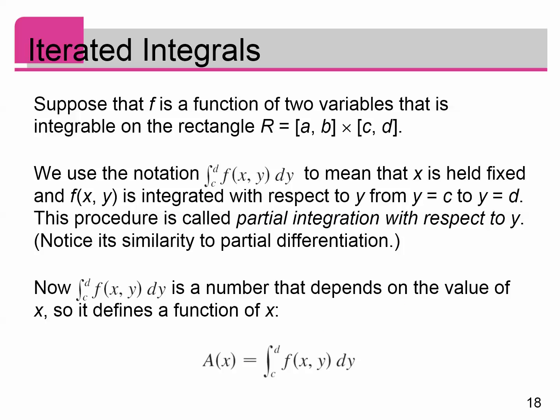So suppose that a function F is a function of two variables on some rectangle. We're going to use the notation the integral from C to D of F of X, Y, DY to mean that this integral treats X as a constant. X is held fixed. And then F of X, Y is integrated with respect to Y only. And then you plug in the limits D and C and subtract. This is called partial integration, and it's very much like partial differentiation where we treat one of the variables as a constant.